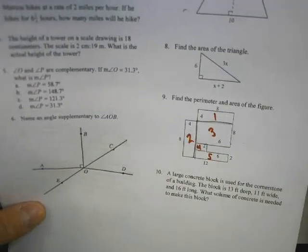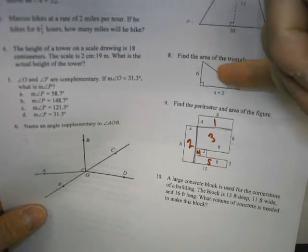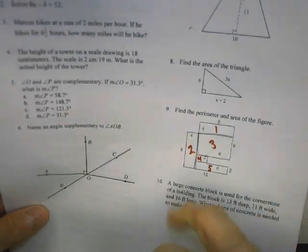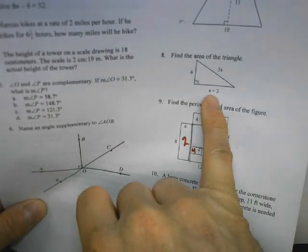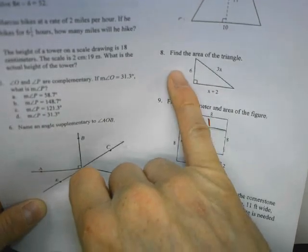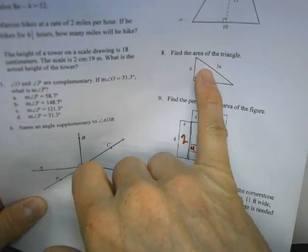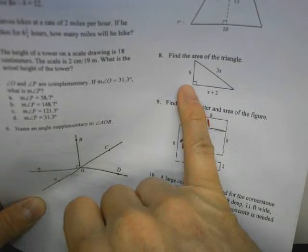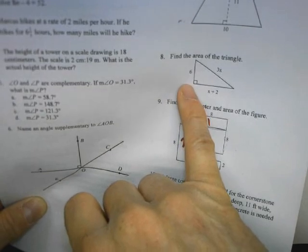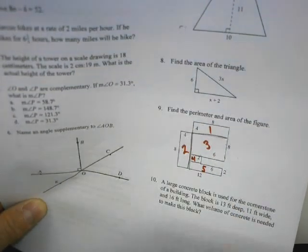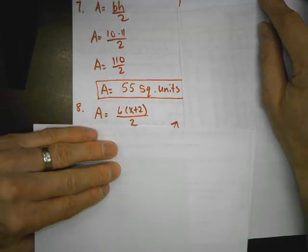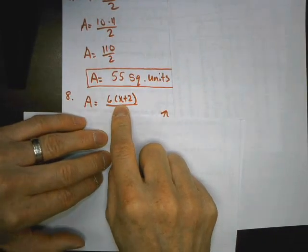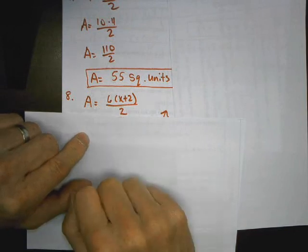When we find the area for number A, it's the same idea. It's still a triangle. But you have to be careful because they give you three measurements. Now, you cannot use that 3x because base and height must be perpendicular. So you're looking for that little box. So you're going to use the 6 and the x plus 2. So we can consider the 6 the height and the x plus 2 the base, not the 3x because that doesn't have that right angle symbol of the little box. So just like I did before, it's going to be base times height, or x plus 2 times 6.